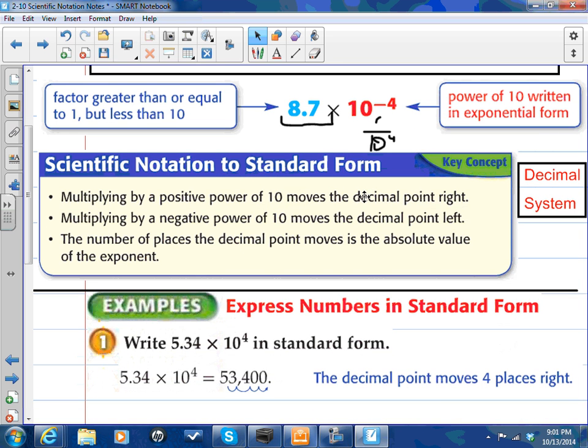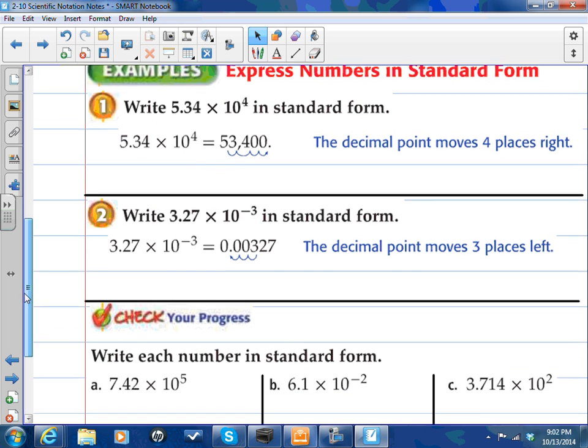So, Scientific Notation to standard form. Standard form would mean like you have the numbers opened out as a full number with no exponents and no multiplication. So, when you multiply by a positive power of 10, you move the decimal to the right. If you multiply by a negative power of 10, you move the decimal to the left. Which makes sense because on a number line, our positives are to the right and our negatives are to the left. The number of places the decimal point moves is the absolute value of the exponent. So, if it's negative 4, I'm going to move it 4 places, but the negative tells me to the left. So it's still the same numerical value, and the negative or the positive tells me the direction.